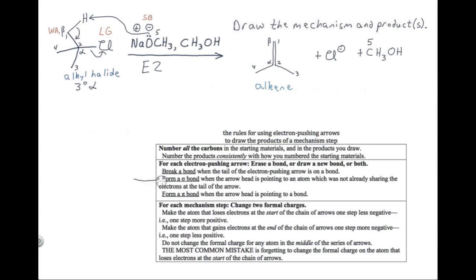The last thing I want to do in this video is explain the rule for when you know to form a new sigma bond from an electron-pushing arrow. Form a sigma bond when the arrowhead is pointing to an atom which was not already sharing the electrons at the tail of the arrow. For example, with the arrow from the lone pair to the hydrogen: the head of the arrow is on the hydrogen and the tail is on the lone pair. In that picture, the hydrogen is not yet sharing the electrons at the tail of the arrow — that's the situation where you should form a sigma bond.